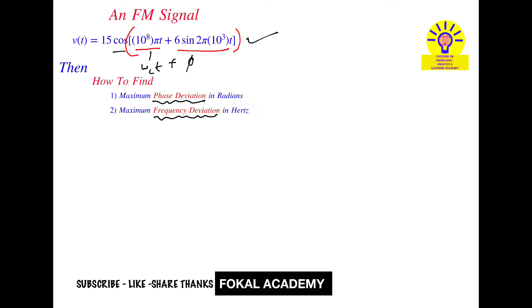Here, the phase is 6 sin(2π × 10³ t). We want maximum phase deviation. This is Φ_max, the maximum phase deviation. So Φ_max equals 6 radians.